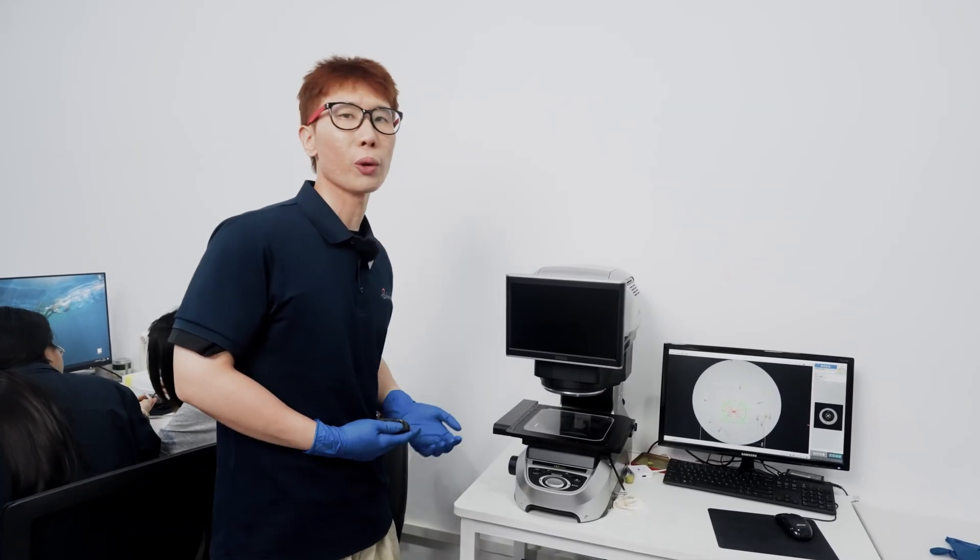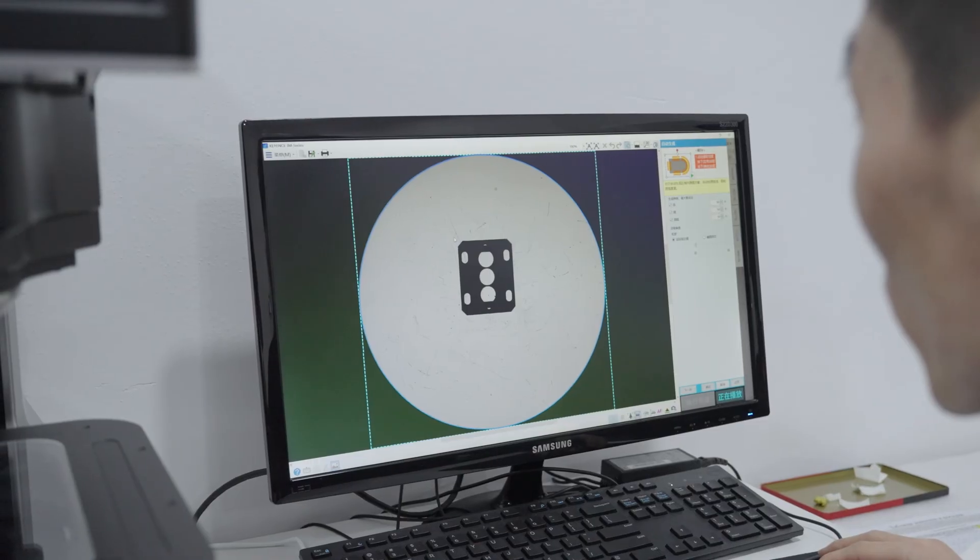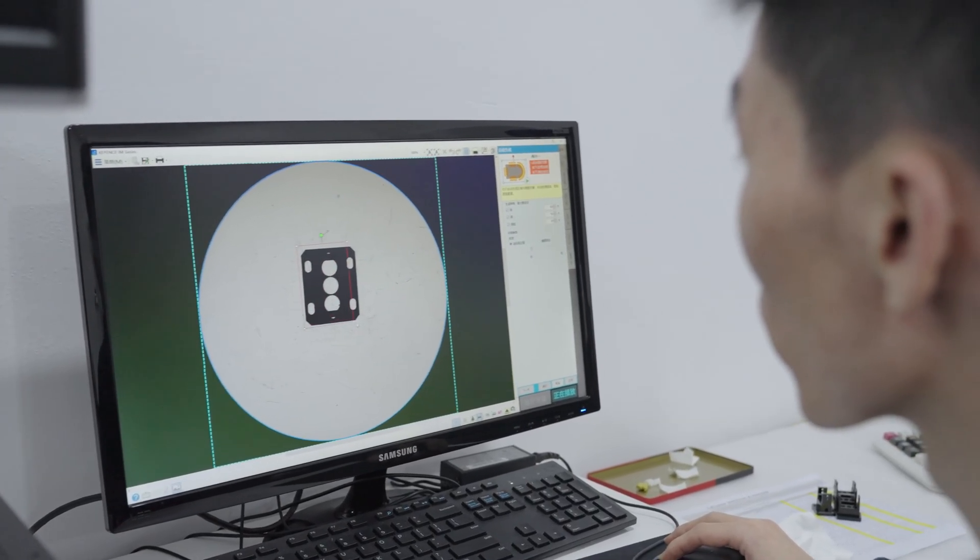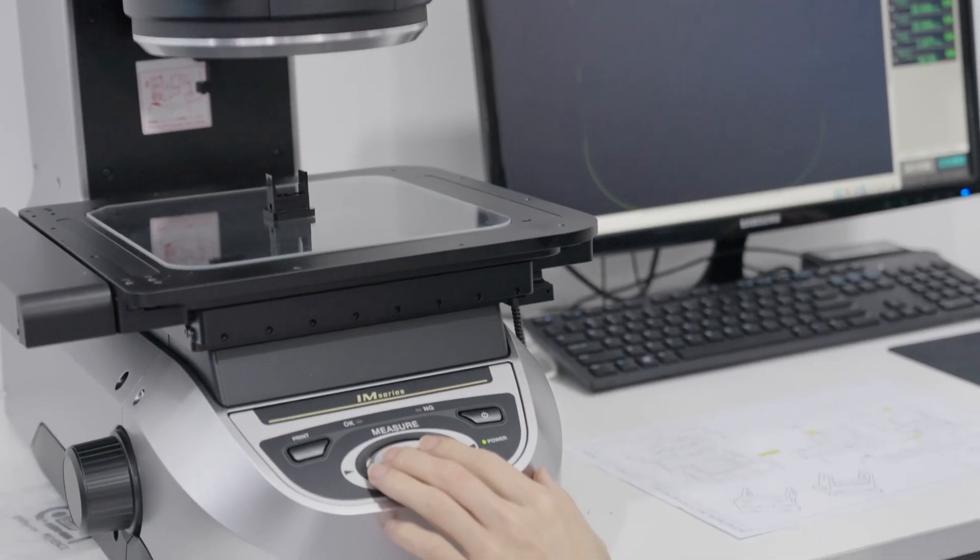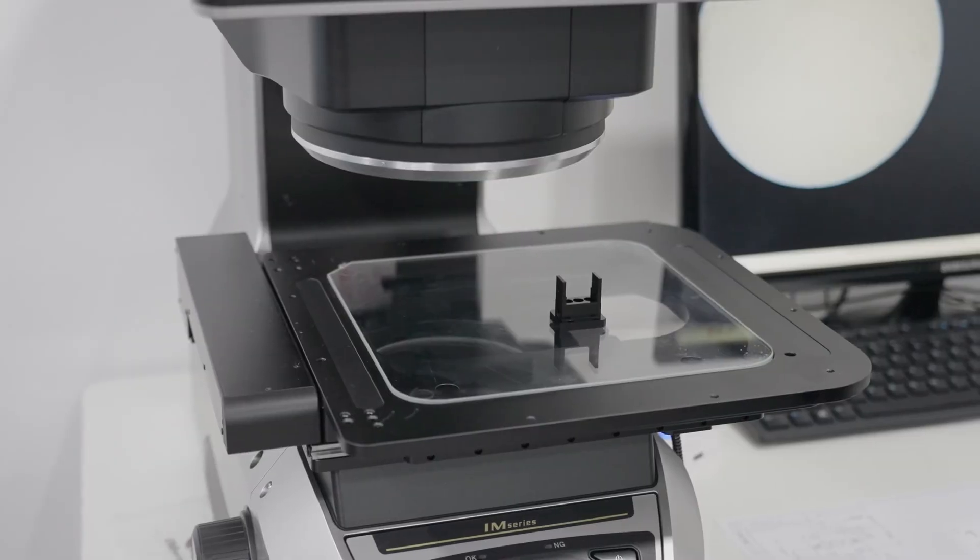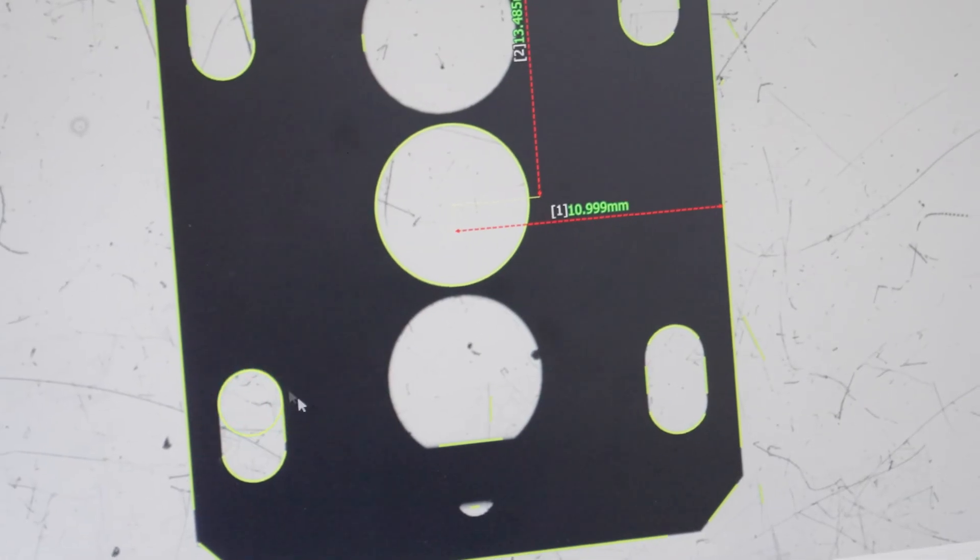As you can see, the main controls here are only the sensor and the button. After you set up the program in the system, place your part under the sensor, and then the last step is pushing the button. The device will start to take photos and execute the inspection program automatically.